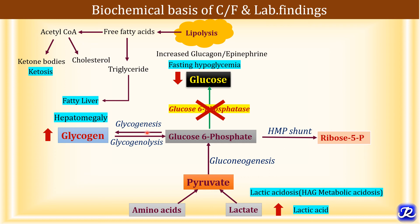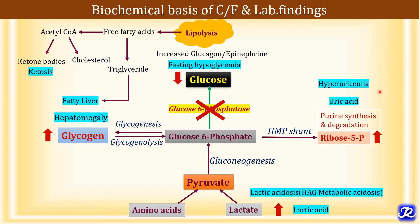Since glucose 6-phosphate concentration is increased, there is more conversion to ribose 5-phosphate through the HMP shunt, resulting in increased purine synthesis and degradation. The end product of purine degradation is uric acid. Additionally, lactic acid competes with uric acid for excretion, so uric acid concentration in blood increases, resulting in hyperuricemia. Increased cholesterol leads to doll's face in the baby, and since glycogenolysis and gluconeogenesis cannot occur, there is increased muscle breakdown, leading to delayed growth and development.